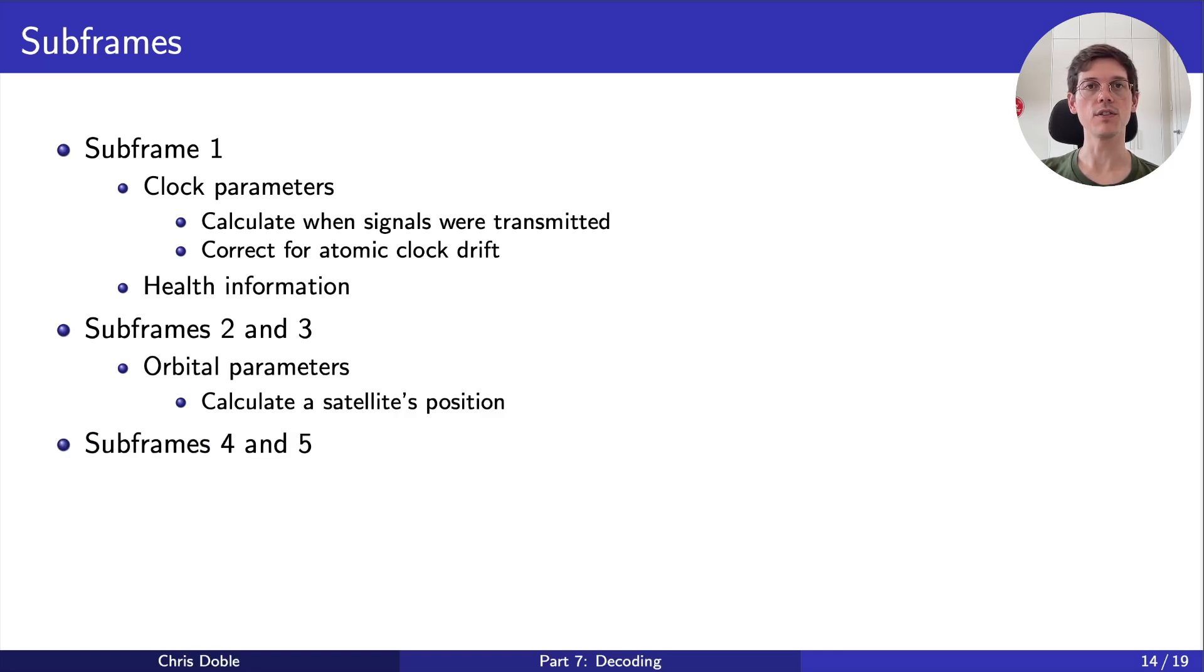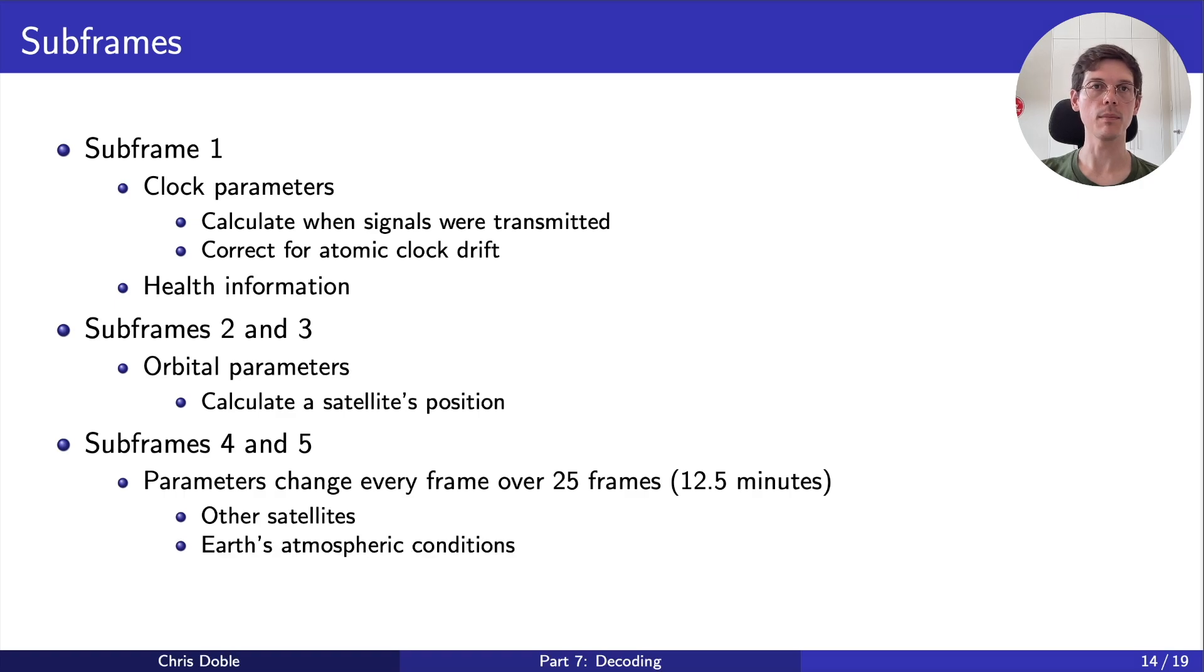Subframes 4 and 5 are special in that the parameters they contain change every frame. Over the course of 25 frames, or 12 and a half minutes, they're used to transmit information about all other satellites in the GPS constellation, and Earth's atmospheric conditions, among other things. Our basic GPS receiver doesn't need any of this information, so we can ignore subframes 4 and 5.